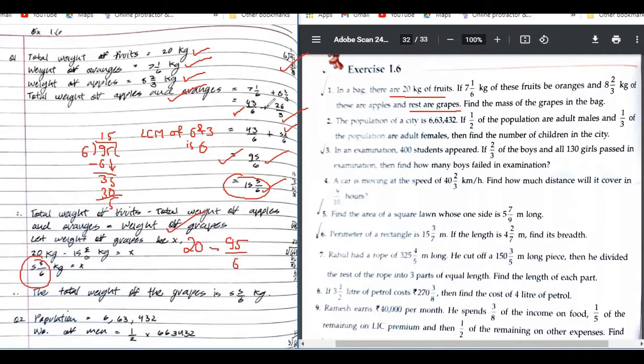Do it right now and tell me the answer. What will be the next step? Then 20 upon 1, yeah, I can take it here. 20/1, and then 20 into 6 and 1 into 6. Yeah, which is 120/6 minus 95/6.